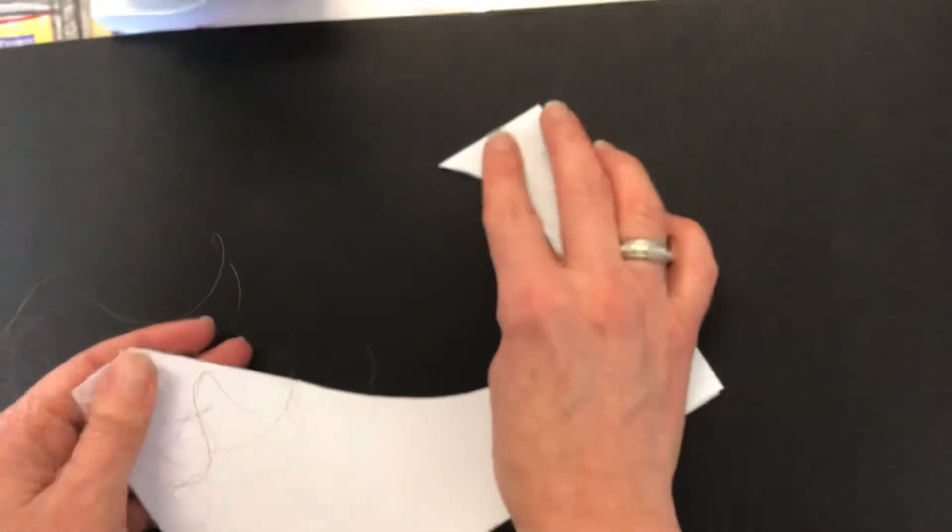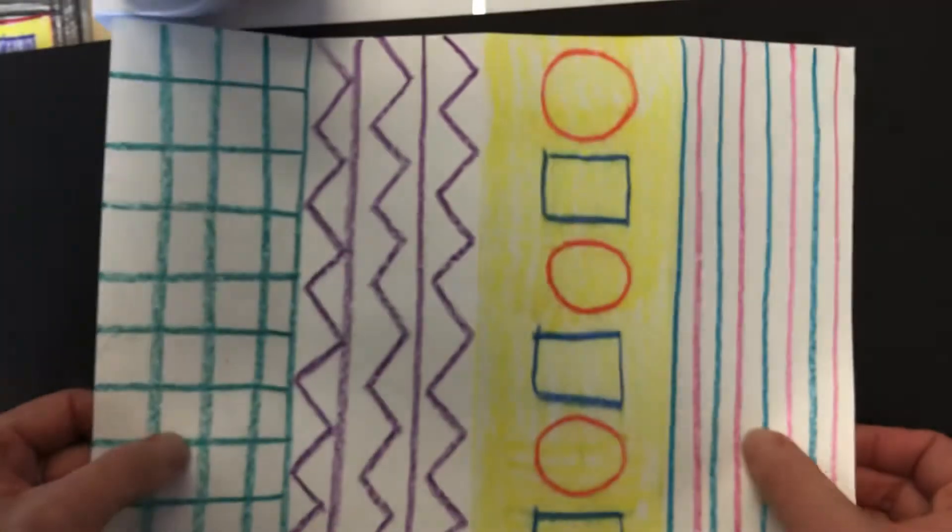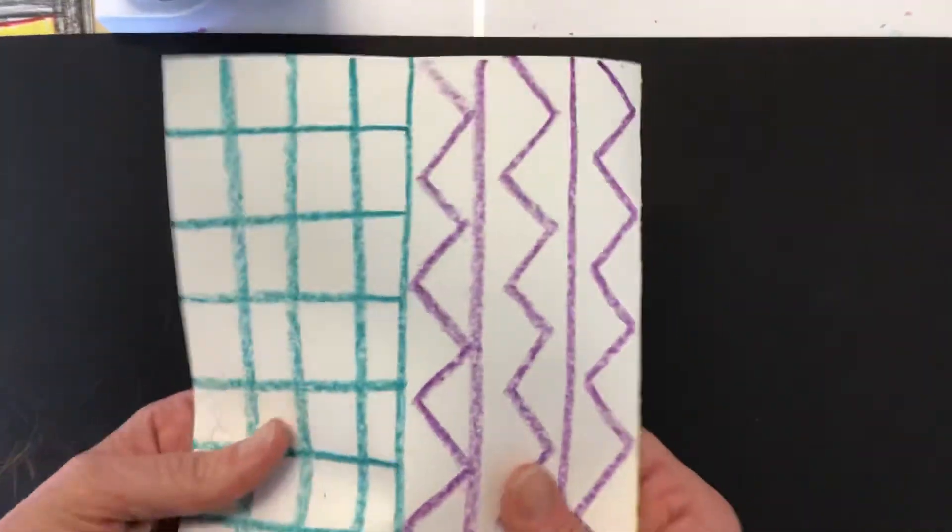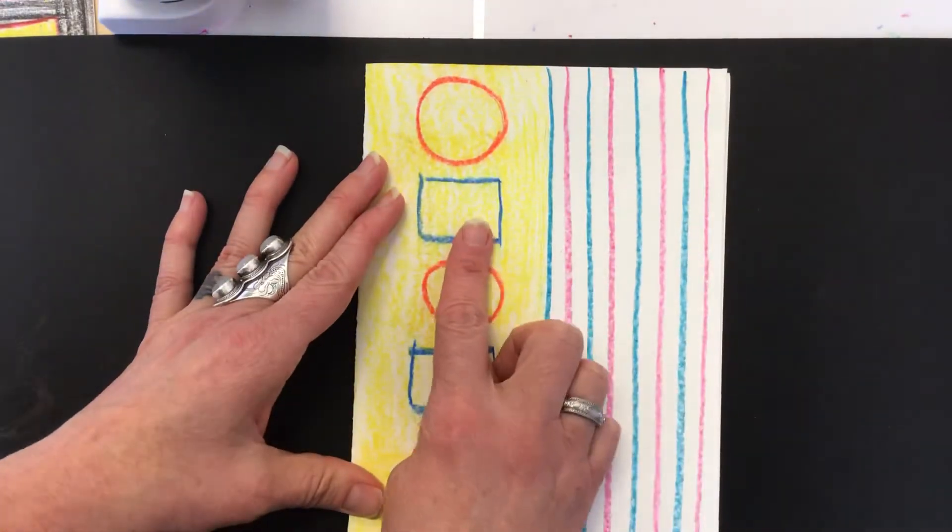Now that we've had some practice, and if you need to practice a couple more times, feel free to do that. Now that we've had that practice, I'm going to go to my pattern sheet of paper, and I'm just going to fold it in half once.